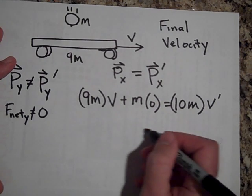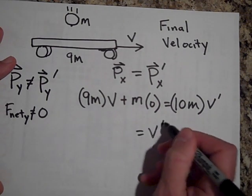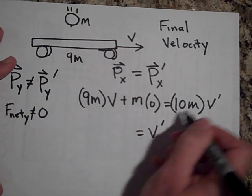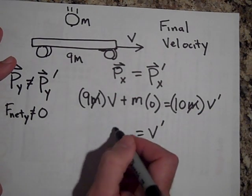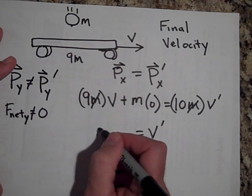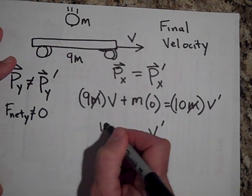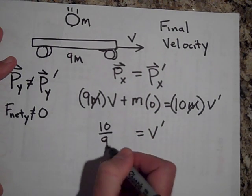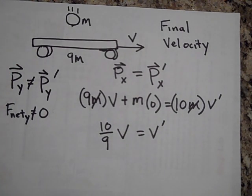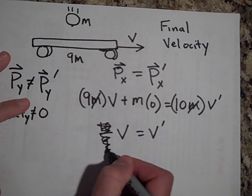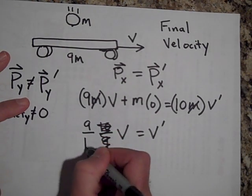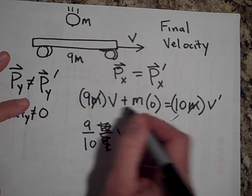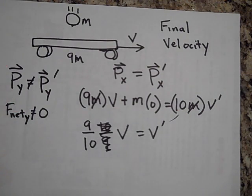Solving for v prime: we can cancel an m, giving v prime equals — wait, that's not right. It can't get faster with something falling into it. So it's nine-tenths v. When you divide 9 by 10, that gives you nine-tenths.